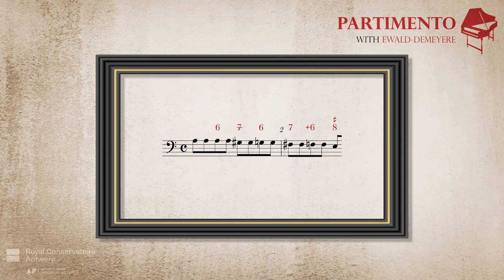Note that the diminished seventh on the G-sharp is prepared by the sixth on the A.